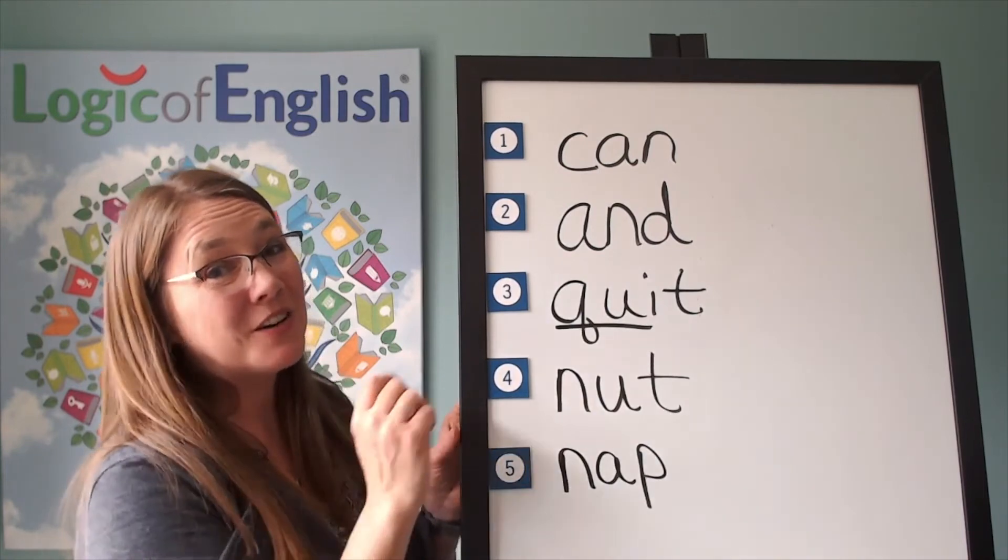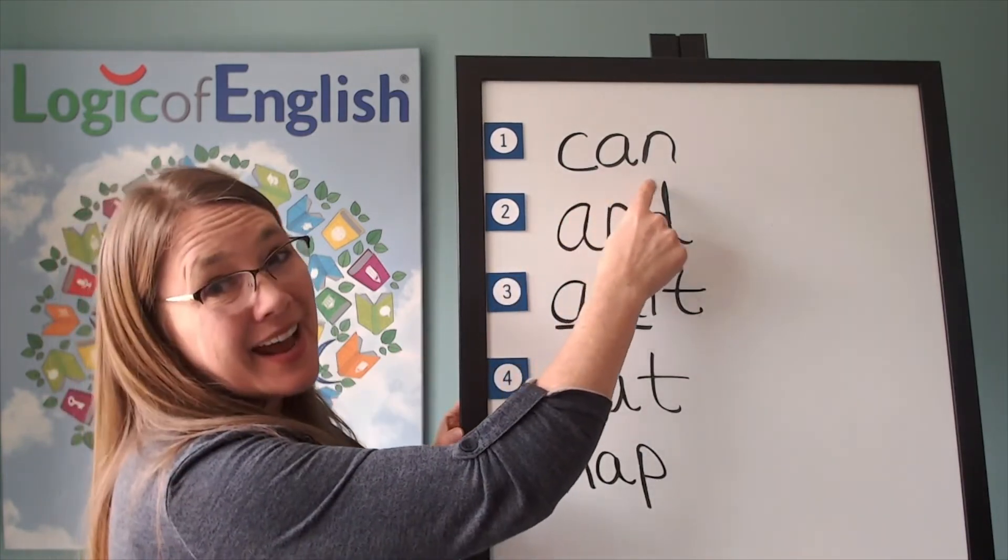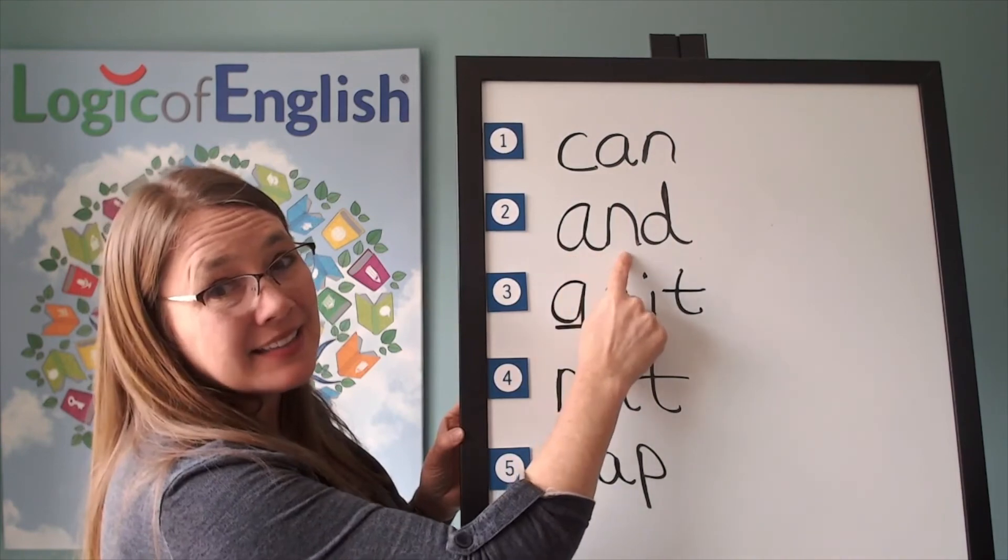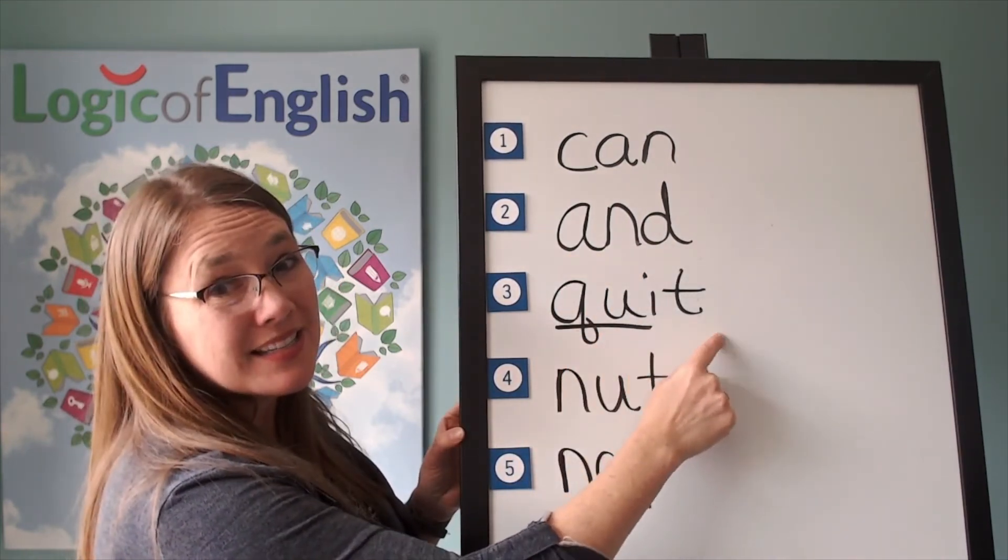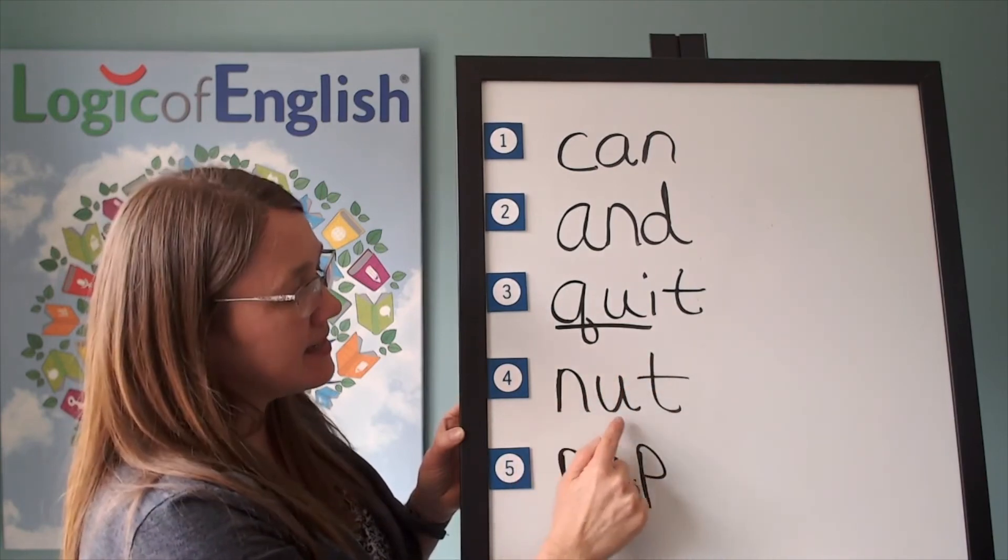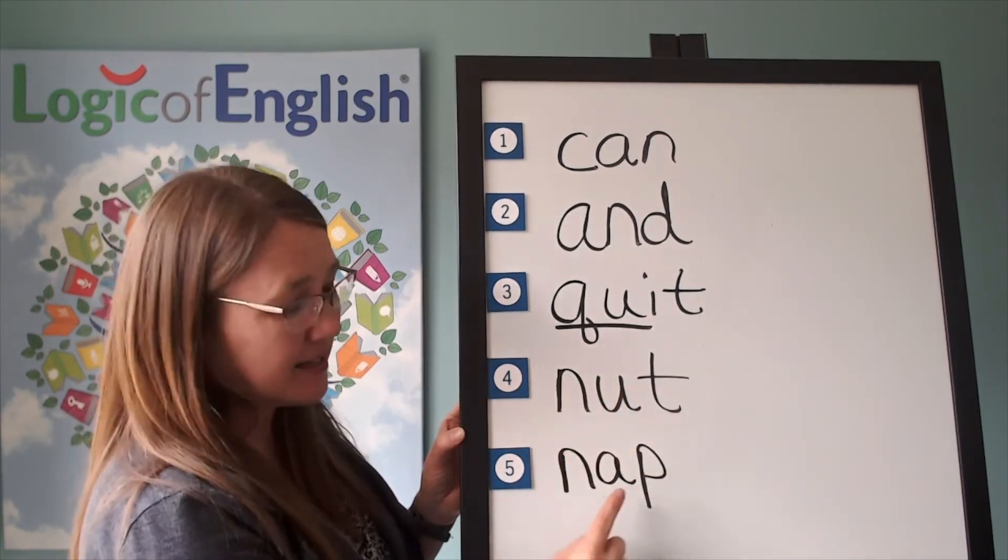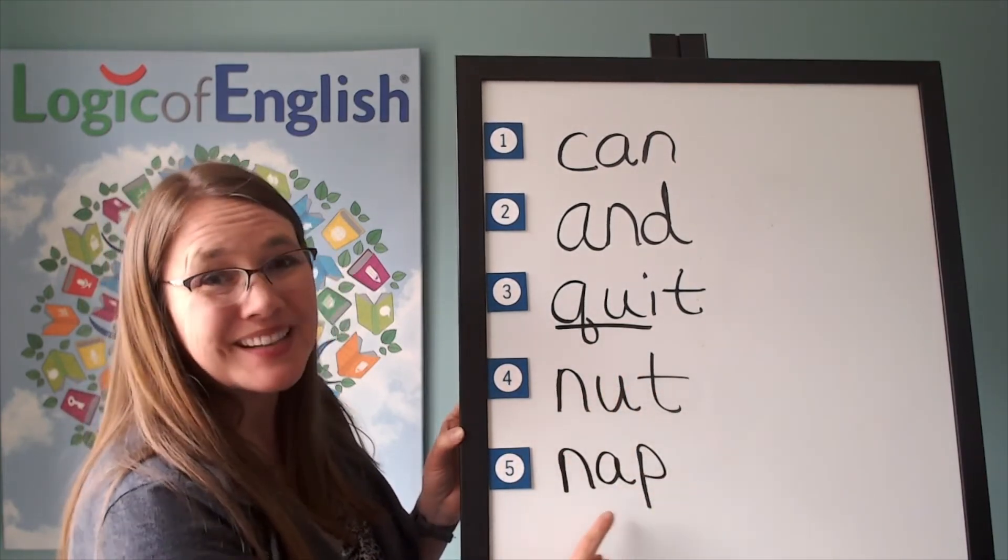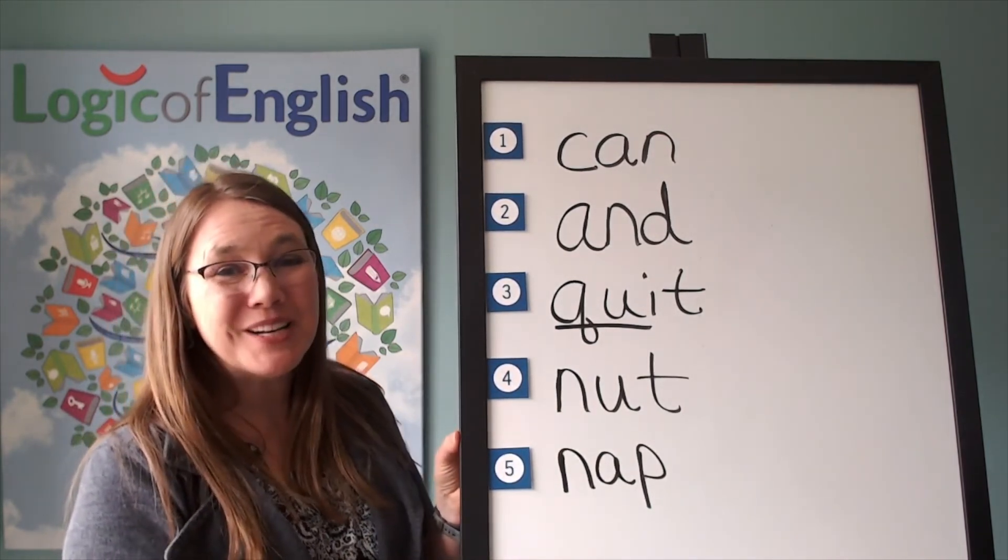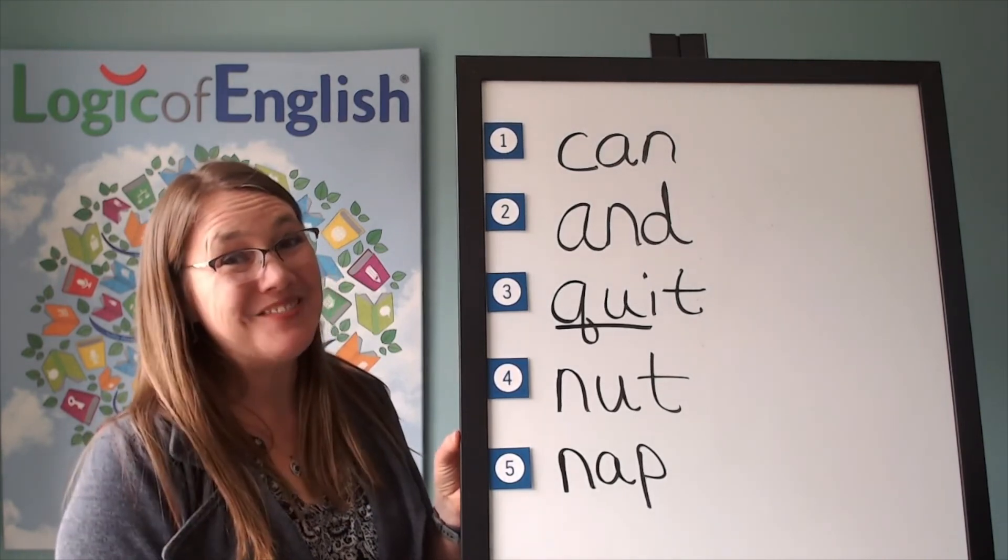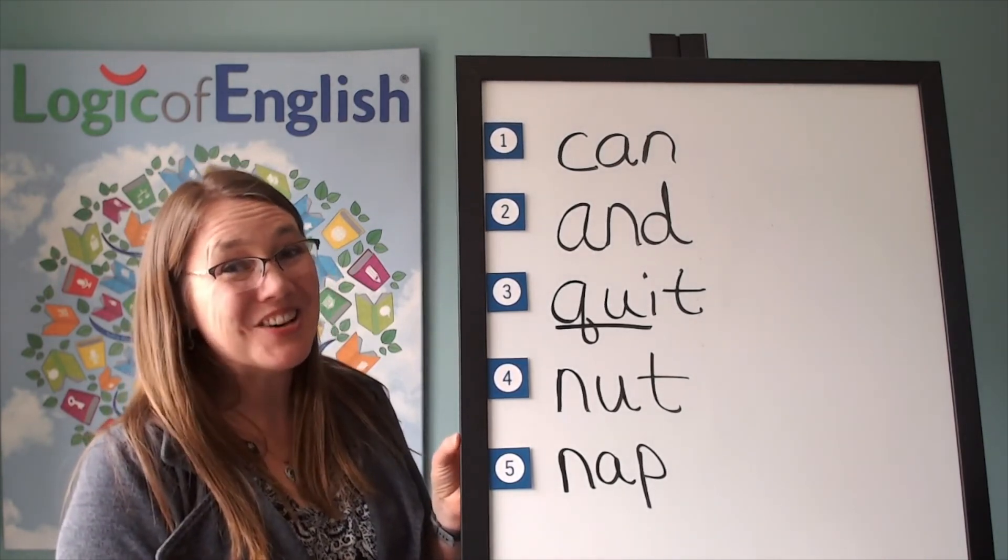Let's read all of our words. C-A-N. Can. A-N-D. And. Qu-I-T. Quit. N-U-T. Nut. N-A-P. Nap. Look at you. You can read so many words now. And you can even spell them. That is awesome.